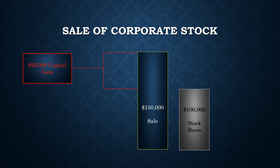Shareholders must report any gain or loss from the disposition of their stock, regardless of how they dispose of it. If Bob agrees to sell his business for $150,000 at a time when his stock BASIS is $100,000, Bob only has to report the difference of $50,000 as a capital gain on his tax return. He would pay more taxes if he sold the business for more than $150,000 or if he had had less stock BASIS. He would reduce his tax bill by either selling the business for less or by having had more stock BASIS.